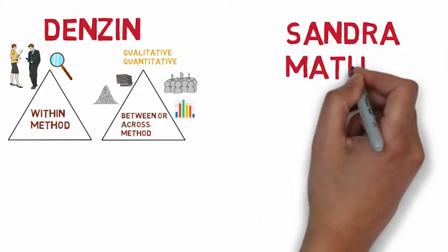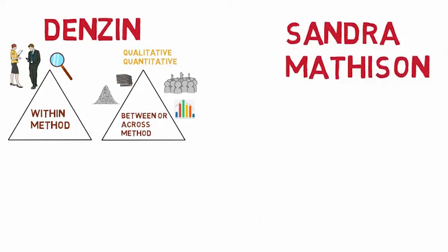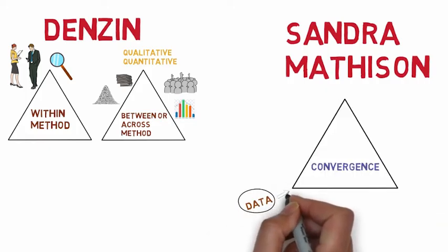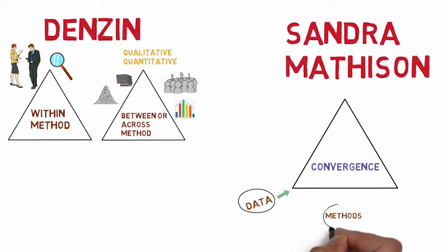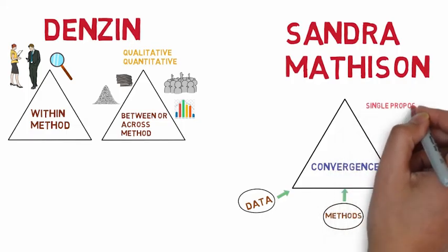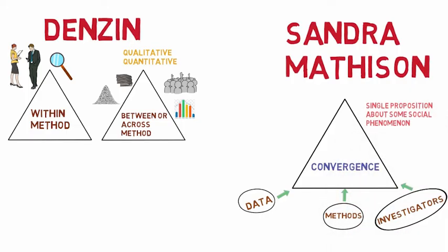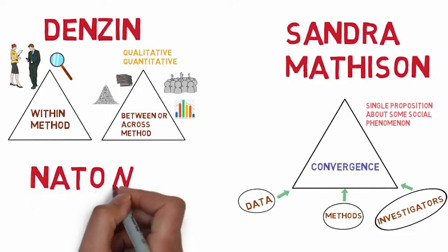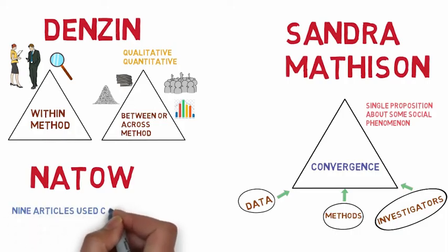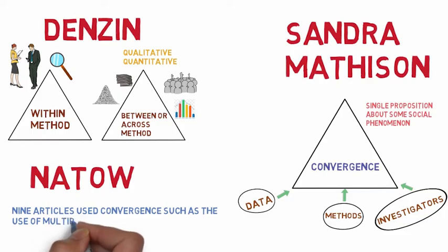Sandra Mathison outlined an alternative way of conceptualizing triangulation — that is convergence — where data from different sources, use of different methods, participation of more than one investigator, and so on will produce evidence that results in a single proposition about some social phenomenon. Another researcher, Natto, after reviewing a number of qualitative articles, reported that nine articles used convergence, such as the use of multiple methods and involving multiple researchers at the same time.